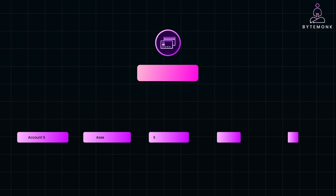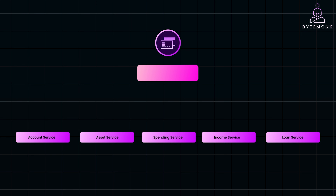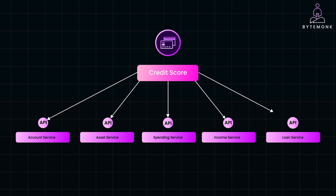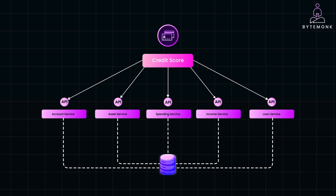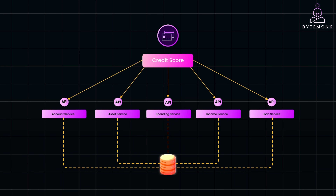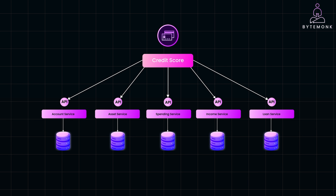Let's say a credit-based financial service requires comprehensive data about users to assess their financial health or credit score to determine their capacity to repay loans. It aggregates data from various sources like financial accounts, assets, spending patterns, income sources and existing loans. Now imagine if all of these microservices shared a single database. Every time a user makes a request — say to calculate their home loan eligibility — the services would need to aggregate data from multiple tables, which can lead to higher latencies and poor user experience. In contrast, with a database per service pattern, each microservice manages its own database based on its domain of function.